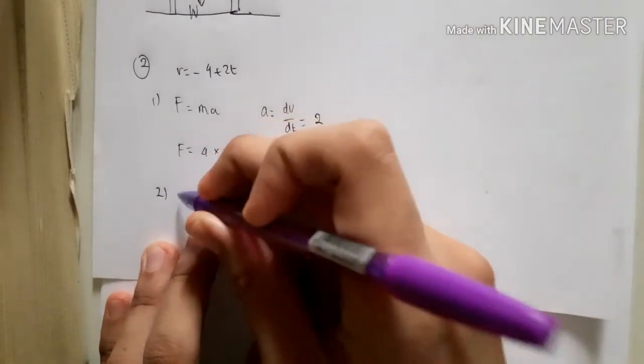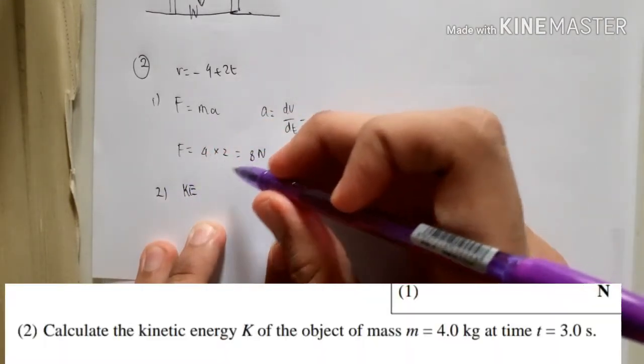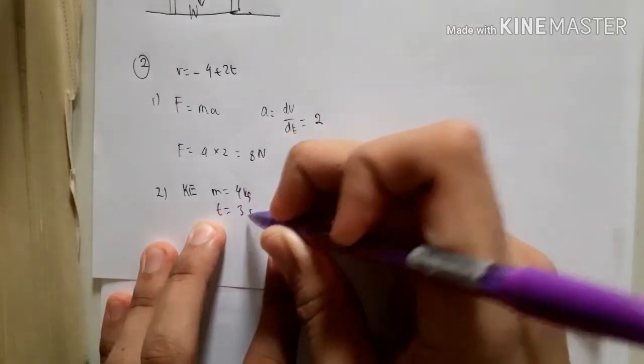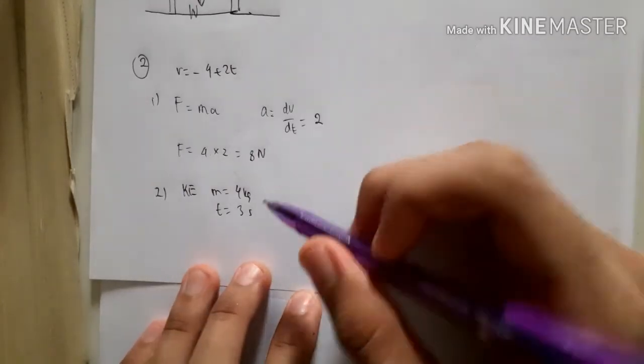And now for number two, calculate the kinetic energy k of the object of the mass 4 kg and at time 3 second. And now, for that, you could actually just put the 3 in the v.